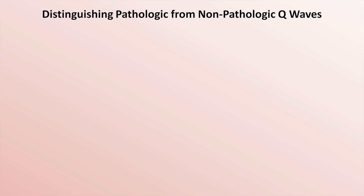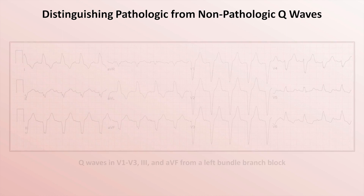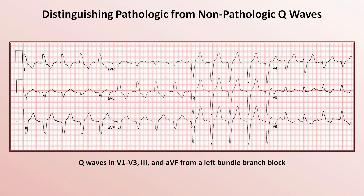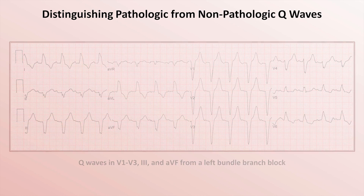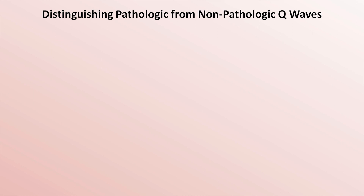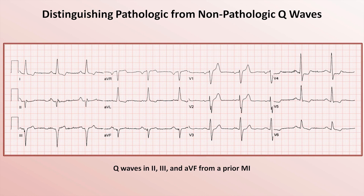To strongly contrast those, here's an EKG from a patient with a left bundle branch block, with very prominent Q-waves in V1 through V3 as a consequence of that. And here is a patient with a prior inferior MI and Q-waves in leads 2, 3, and AVF.